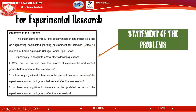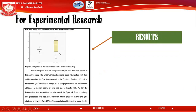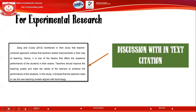For experimental research, your statement of the problem asks about the pre-test and post-test of the experimental and control groups. One figure type used is a box plot — I will demonstrate creating one during our synchronous session. For statement of the problem number one, prepare your results showing the comparison. Discuss what is shown in the graph, and do not forget discussion with in-text citation.